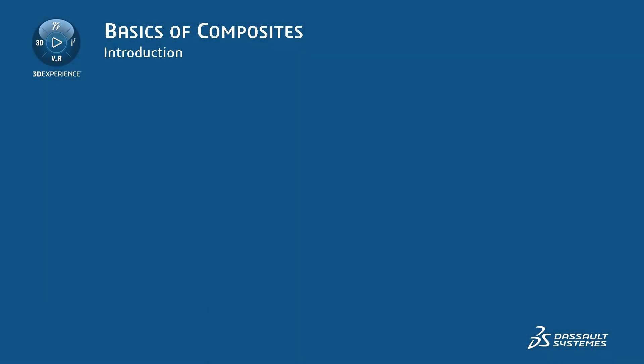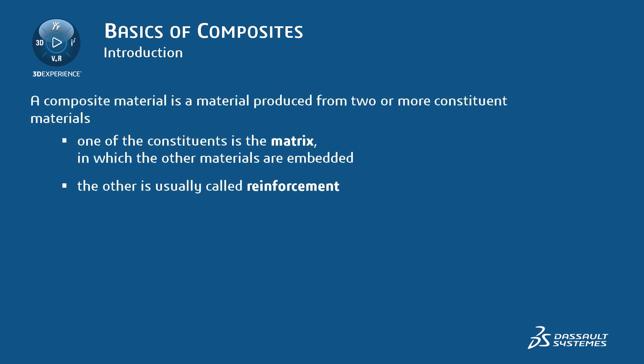First of all, let's define what a composite material is. A composite material is a combination of two or more materials with different physical and chemical properties. These properties complement each other, creating a specialized material best suited for different and specific applications. For example, the resulting material of combining two constituents may be stronger, lighter, or resistant to electricity.